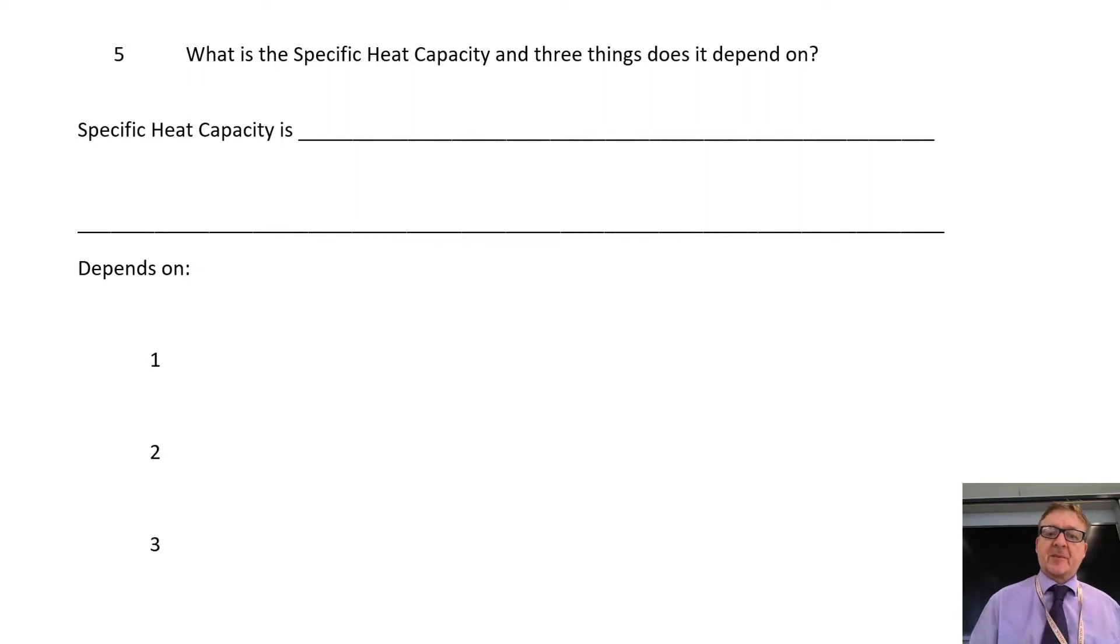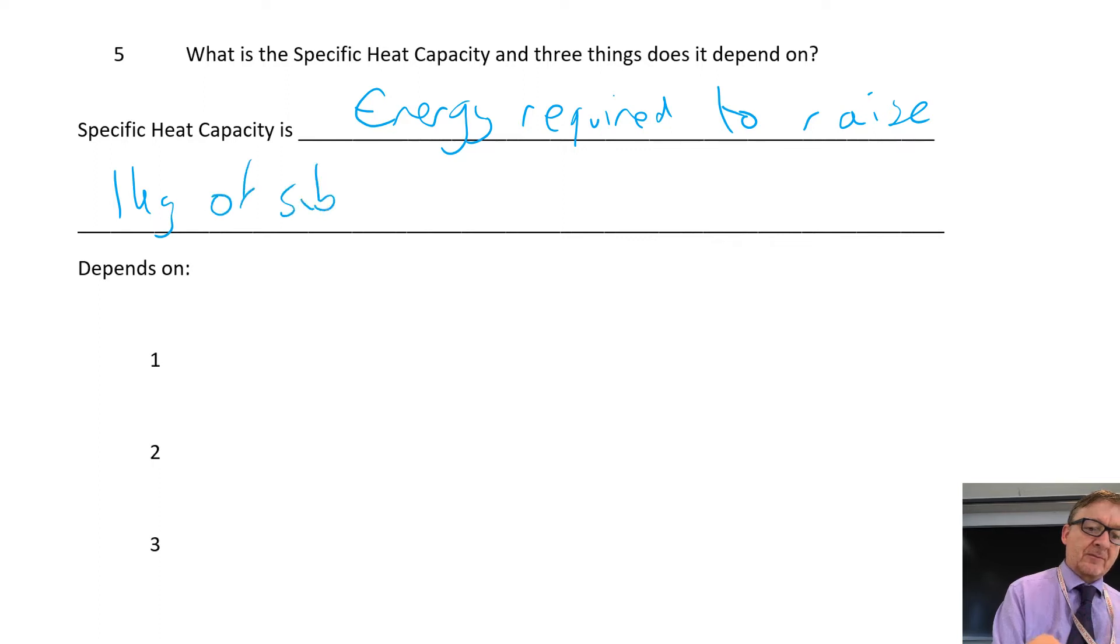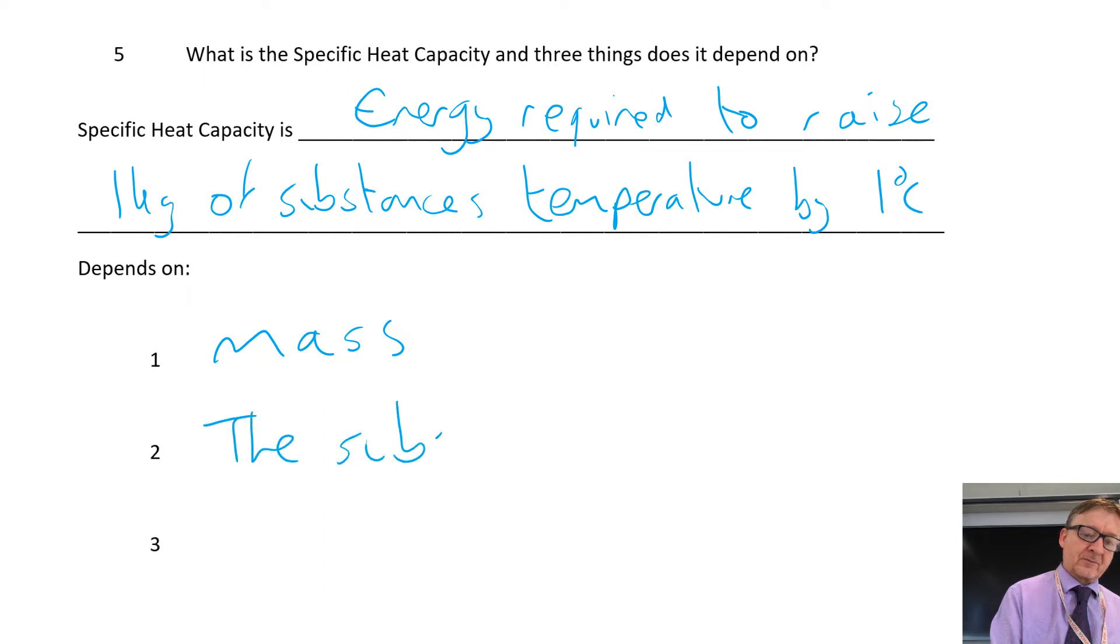Question number five what is specific heat capacity and which three things does it depend on specific heat capacity is the energy required to raise one kilogram of substance is temperature by one degree C. It depends on how heavy it is so the mass it depends on the substance so iron and tin may well have well they will have different specific heat capacities and it also depends on the energy put in.